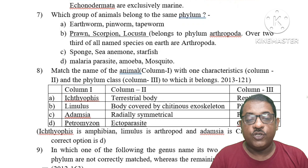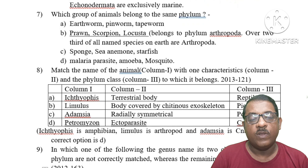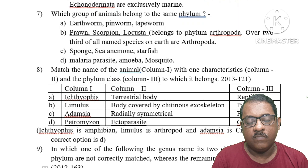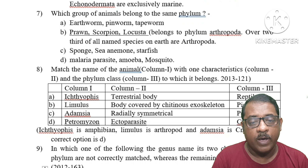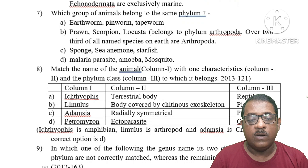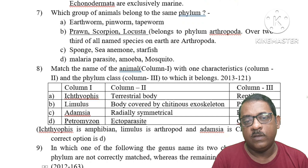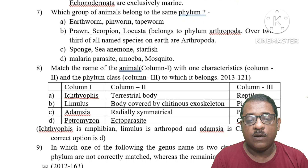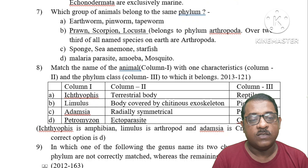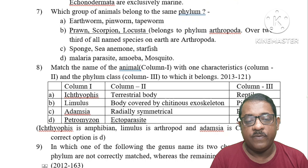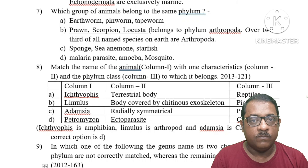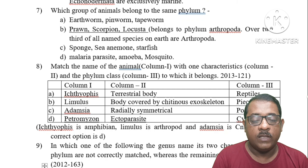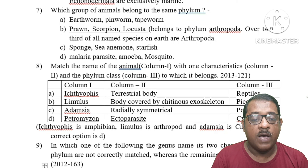Question 7: Which group of animals belongs to the same phylum? Option A: Earthworm, pinworm, tapeworm — these belong to different phyla. Option B: Scorpion, locust — all these are within phylum Arthropoda. Option C: Sponge, sea anemone, starfish — belong to different phyla. Option D: Malaria parasite (Plasmodium), Amoeba and mosquito — different phyla. The right answer is Option B, as scorpion and locust both belong to phylum Arthropoda.